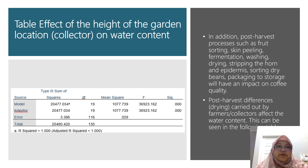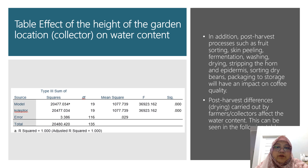This is the table showing the effect of the height of the garden location or the collector on water content. In addition, post-harvest processes such as fruit sorting, skin peeling, fermentation, washing, drying, stripping the horn skin, and epidermis sorting, dry bins packaging, and storage will have an impact on coffee quality. Post-harvest differences in drying carried out by the farmers and collectors affect the water content, as seen in the following table.